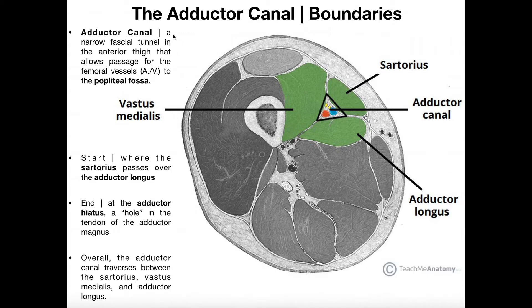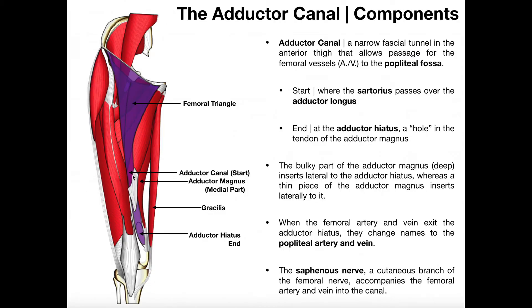Really what it is, is a fascial tunnel in the anterior thigh that allows passage for those vessels down to the popliteal fossa. But to really talk about the boundaries, we need to look at a different view.